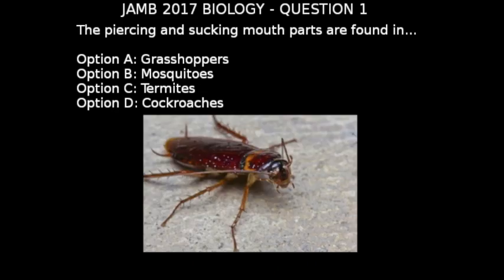Option D is cockroaches — an insect found in almost every home. Cockroaches generally eat what's available to them: dead matter, vegetables, fruits, breads, and even paper. So they need mouthparts adapted to chewing these materials, making option D incorrect.